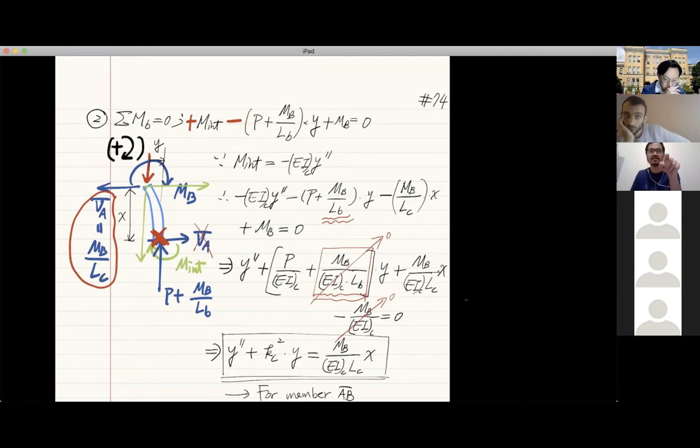But on the bottom, we keep that mb over EIc*Lc*x to the right. And the final equation, the y double prime plus Kc squared y, over there it should be negative based on the previous equation, should be negative.